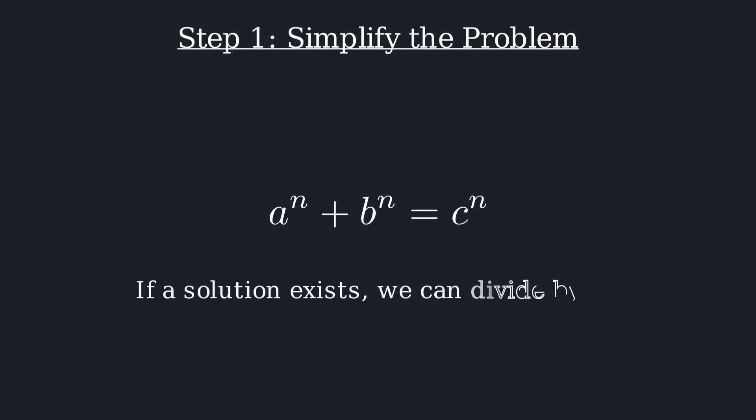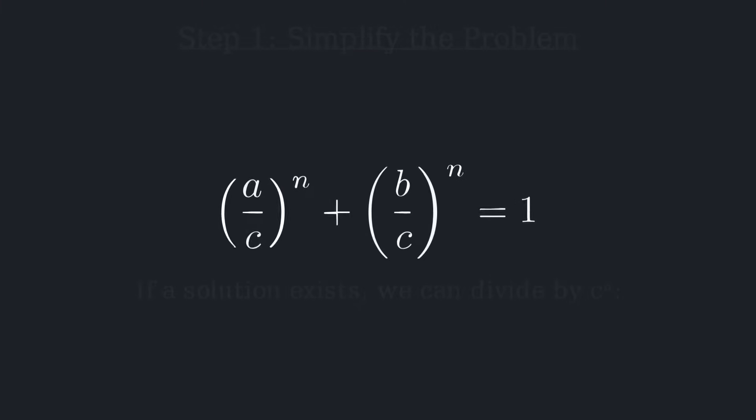Step 1: Simplify the problem. We start with Fermat's famous equation. If a solution exists, we can divide by c to the n. This algebraic step transforms the expression into (a over c) all to the power of n plus (b over c) all to the power of n equals 1.